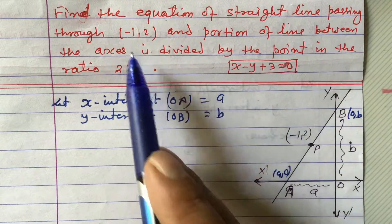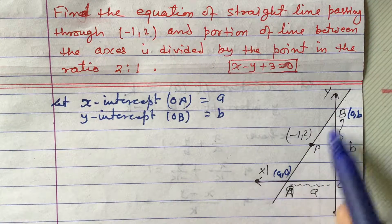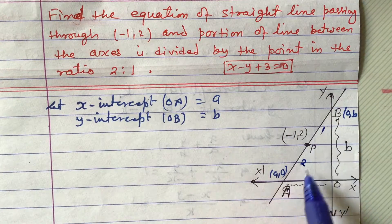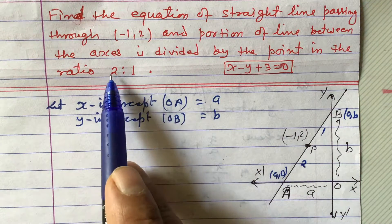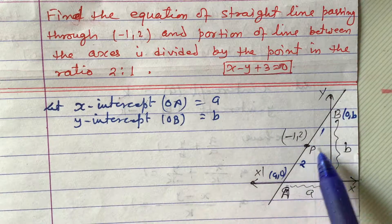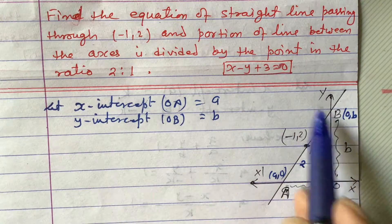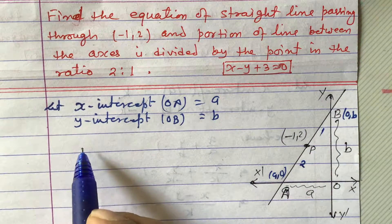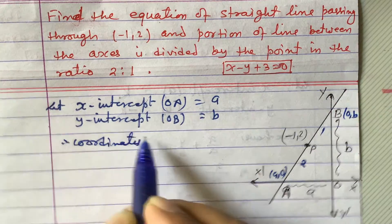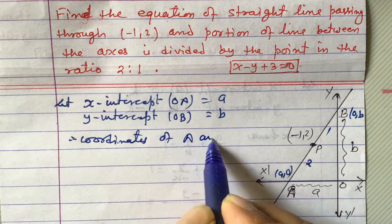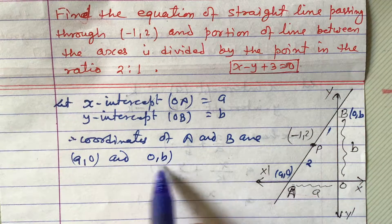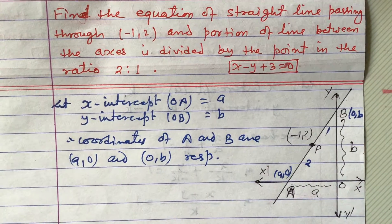Point P divides AB. The portion of the line between the axes, AB, is divided by the point in the ratio 2 is to 1. The first ratio 2 is towards the X-axis and the second ratio 1 is towards the Y-axis — always remember this. Therefore, the coordinates of A and B are A comma 0 and 0 comma b respectively.